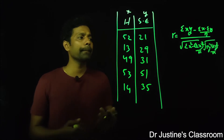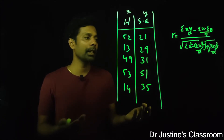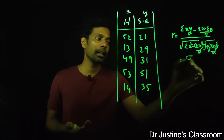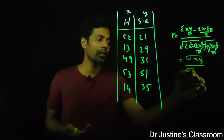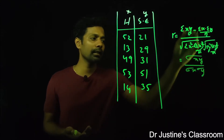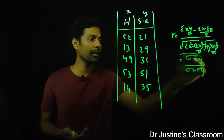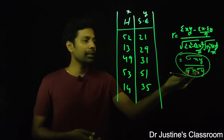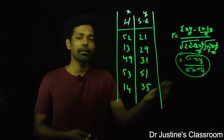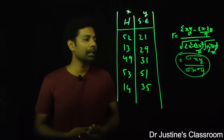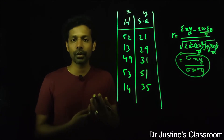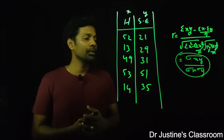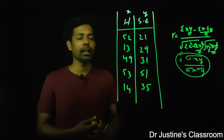What if some assumptions are not met, such as normality? The Pearson correlation can also be expressed as the covariance of x and y divided by the product of their standard deviations. But if the data is not normally distributed, you cannot trust the arithmetic mean, and standard deviation and variance cannot be reliably calculated.